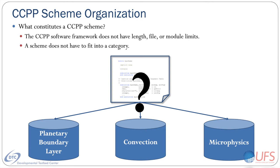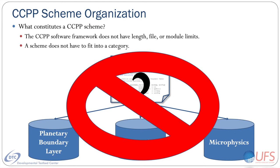We've run an entire physics suite as one CCPP scheme, and one-liners with equal success. There are no categories that a scheme needs to comply with, like planetary boundary layer or deep convection or microphysics, although many existing schemes within the CCPP could certainly be classified as such. So, there's a lot of flexibility here.